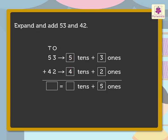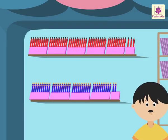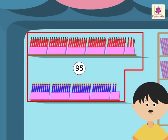Thus, 9 tens and 5 ones is equal to 95. So 53 plus 42 is equal to 95. Look, Uncle Sam has 95 pens in his shop.